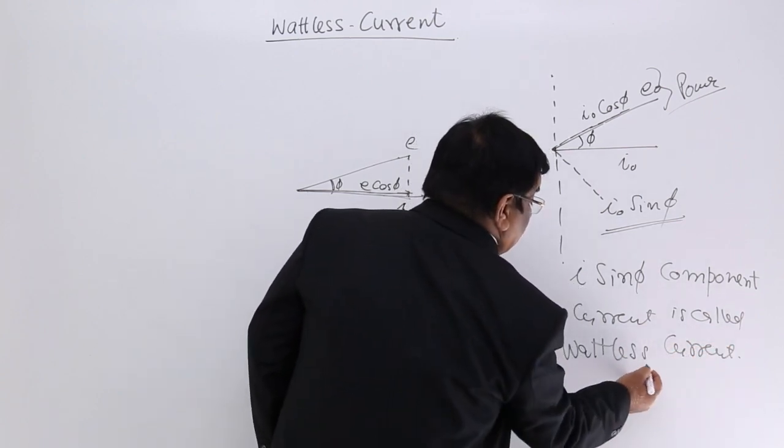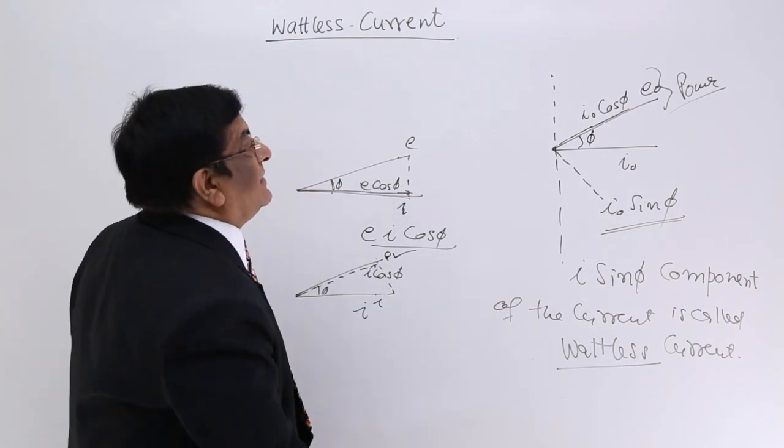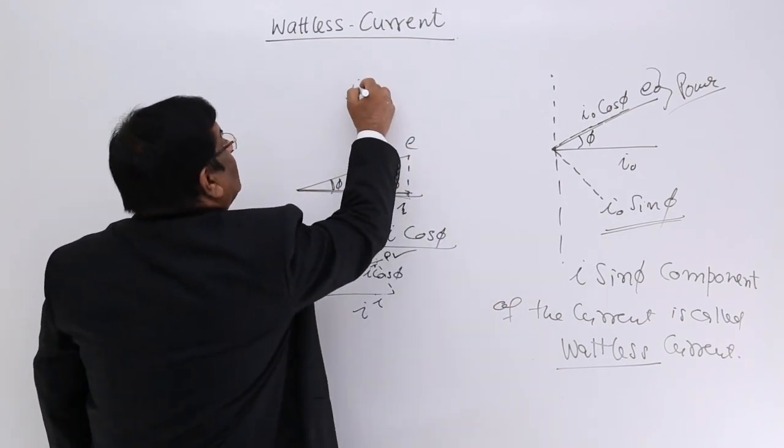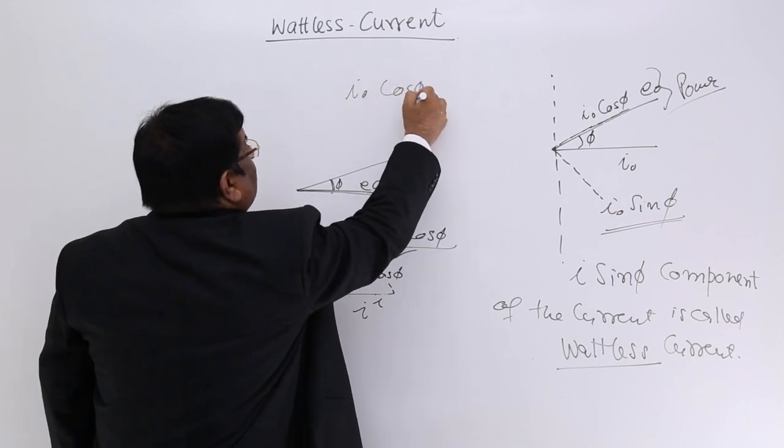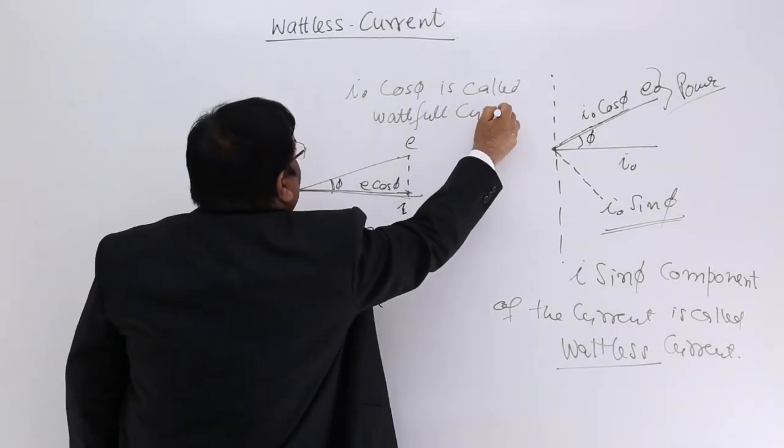So this is wattless current, which means no power. What is I cos φ? I0 cos φ makes the power, so it is called wattful current.